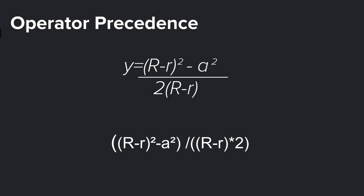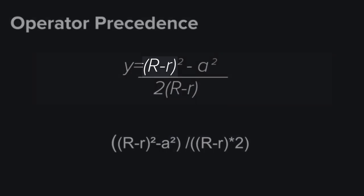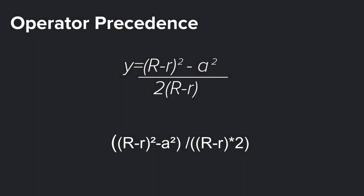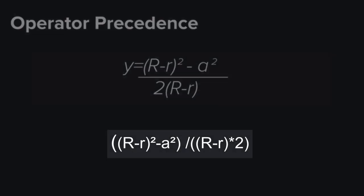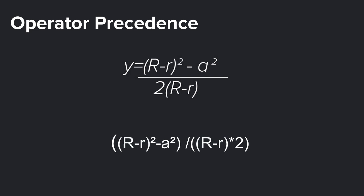Before diving into Grasshopper, I'd like to talk about a concept called operator precedence, which is used in computer programming to clarify which procedure should be performed first in a given mathematical expression. In Grasshopper we can do this by using parentheses in a hierarchical way. The order in which we solve our expression is to start with the operations inside the parentheses, then do the divisor and dividend separately, and finally perform our division.